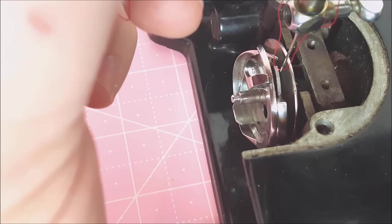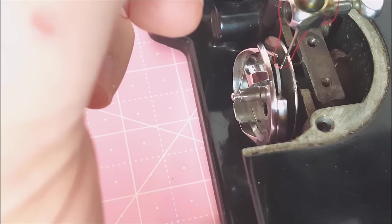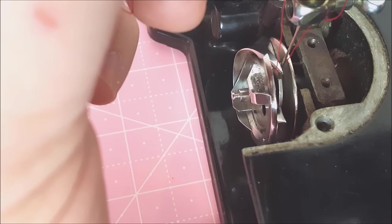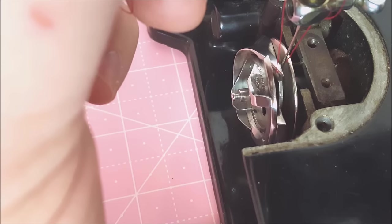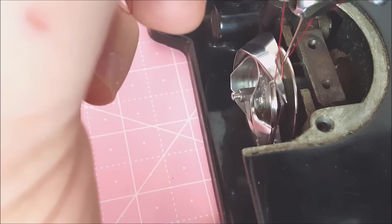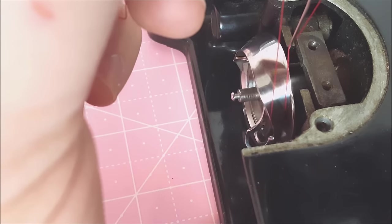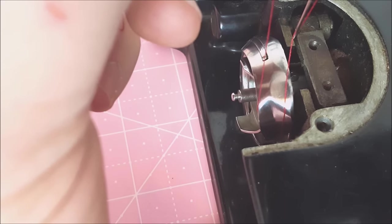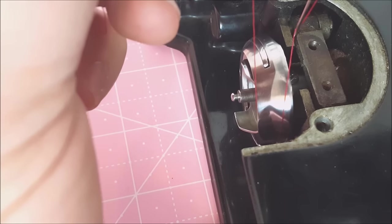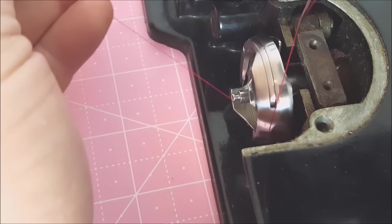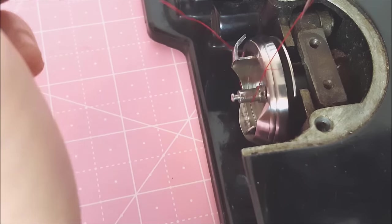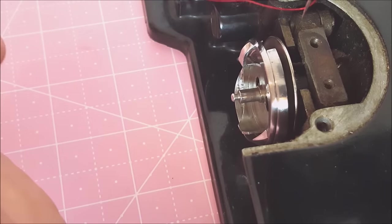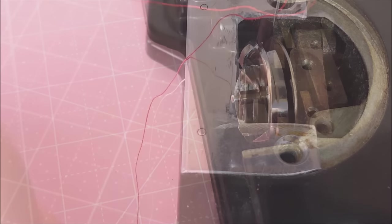And what that will do is it will go through that little loop that's formed when the thread relaxes. And so it will pull around. And if we had a bobbin case on the machine, it would slip all the way around like such. It's going to get hung up there. And then it would pull the bobbin thread back up to the fabric and that would form one stitch.